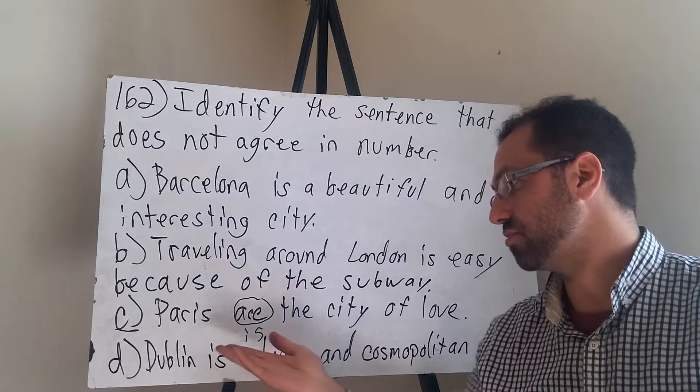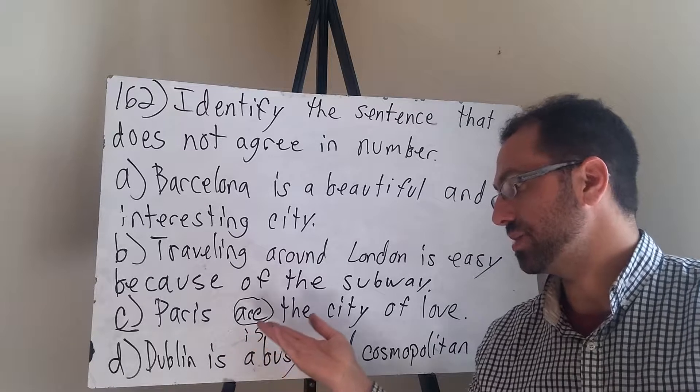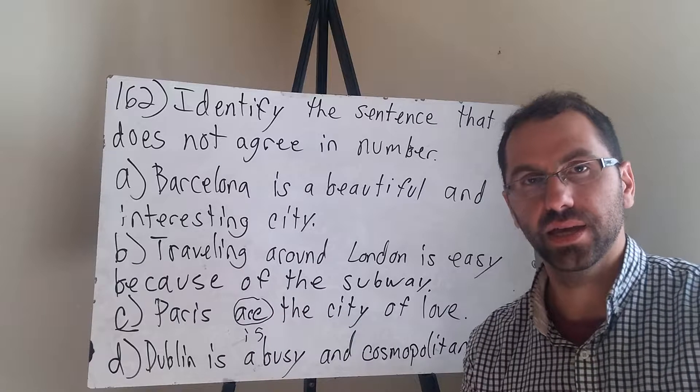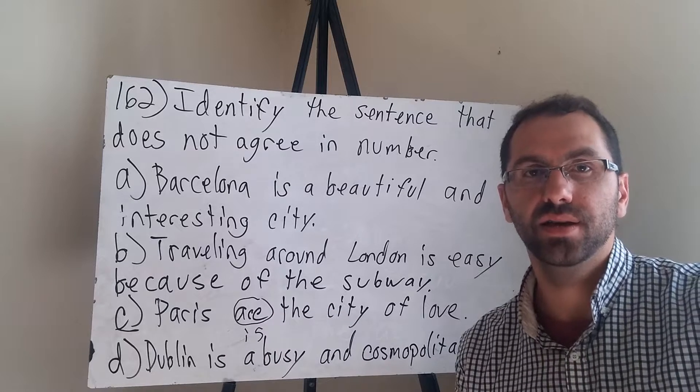The answer is choice C: Paris are the city of love. The reason is because of the word 'are' here — it should be 'Paris is the city of love,' because we are talking about just one city, Paris. That's why we have to change 'are' to 'is.'